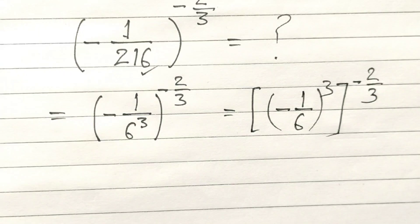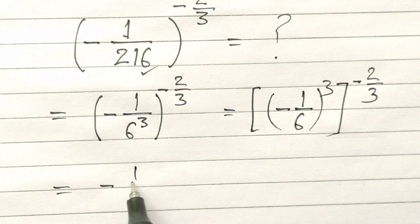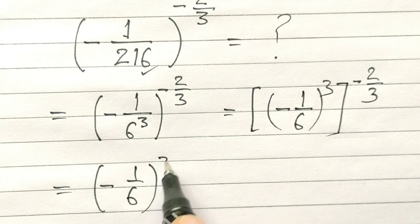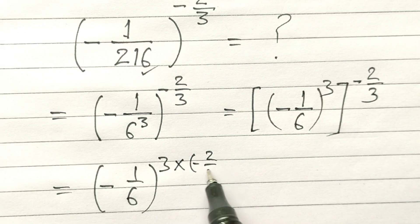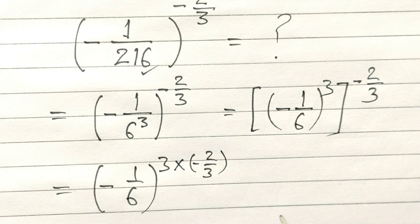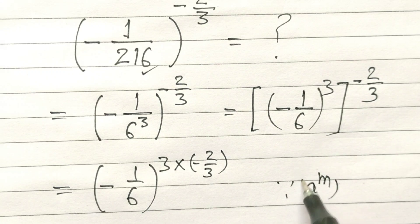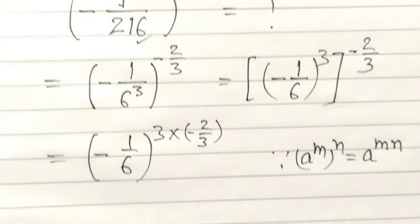So we have (-1/6) to the power 3 times minus 2 by 3, because a^m raised to the power n equals a^(mn).